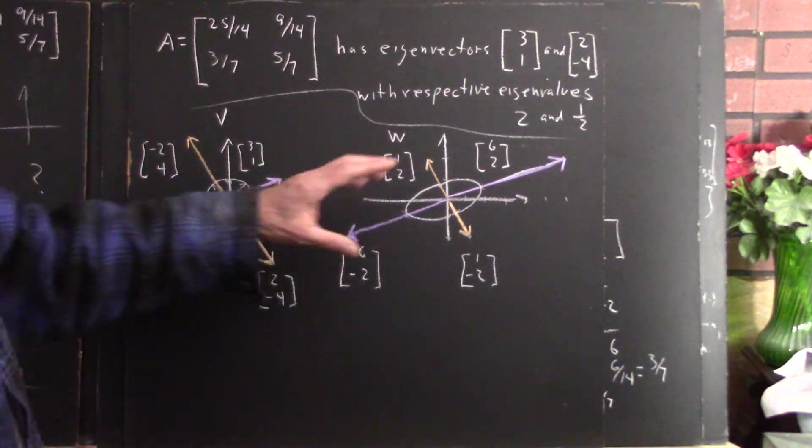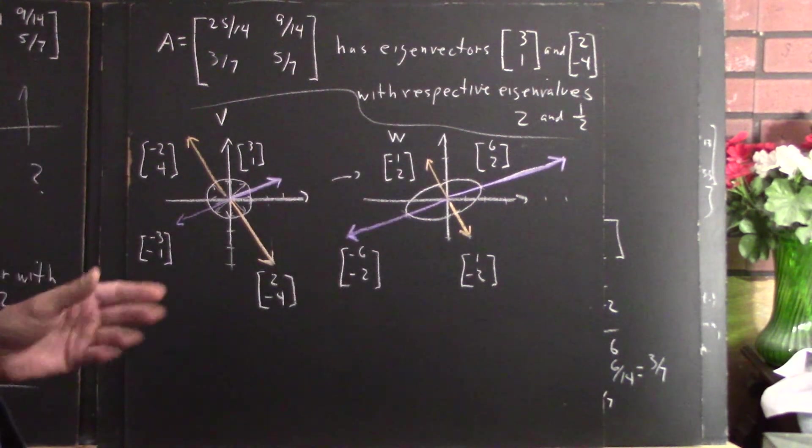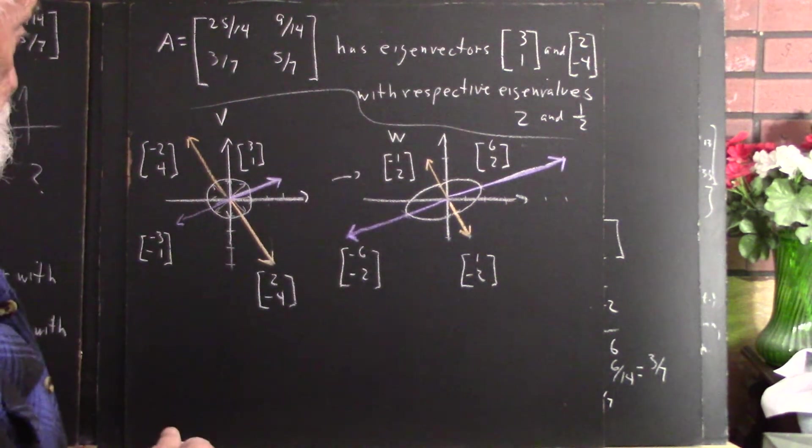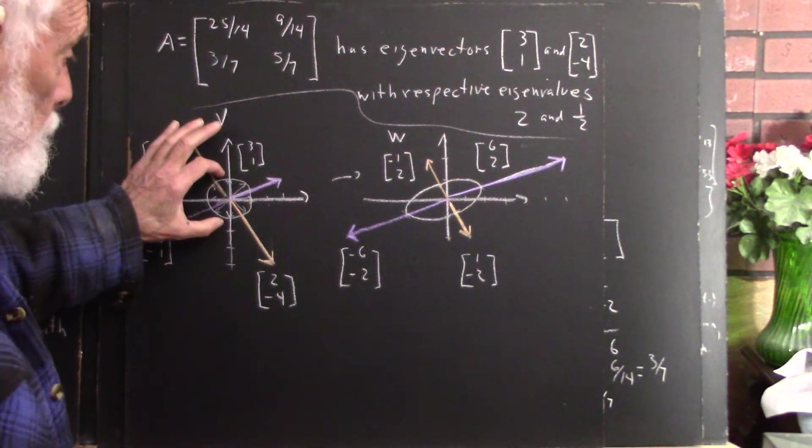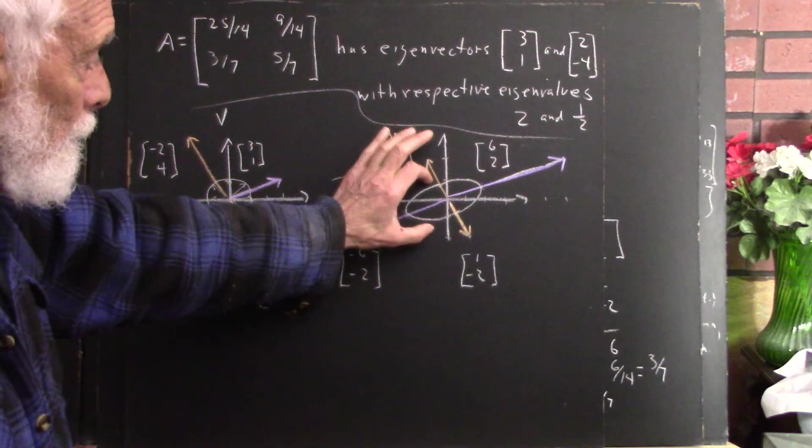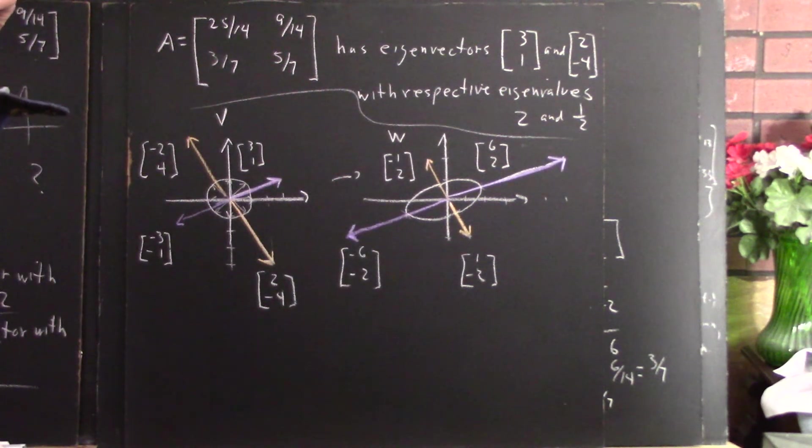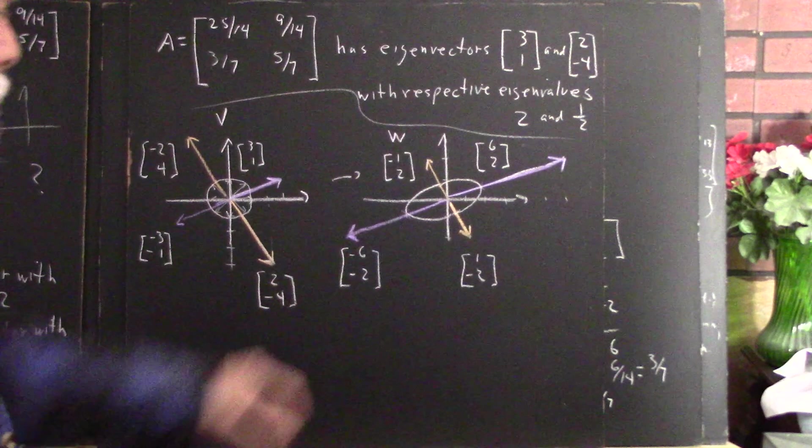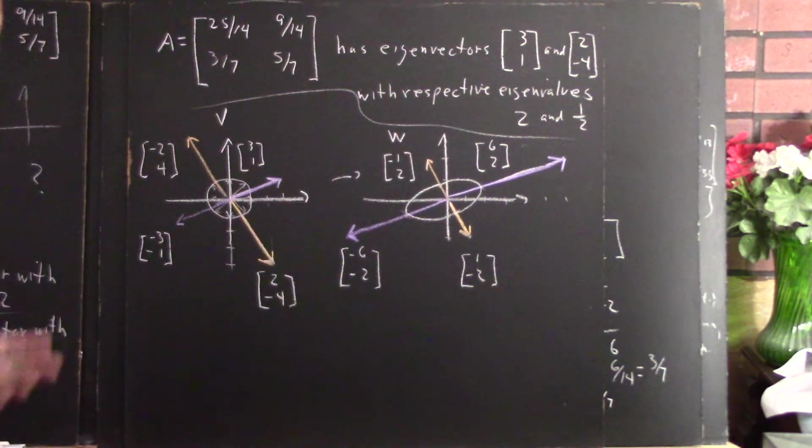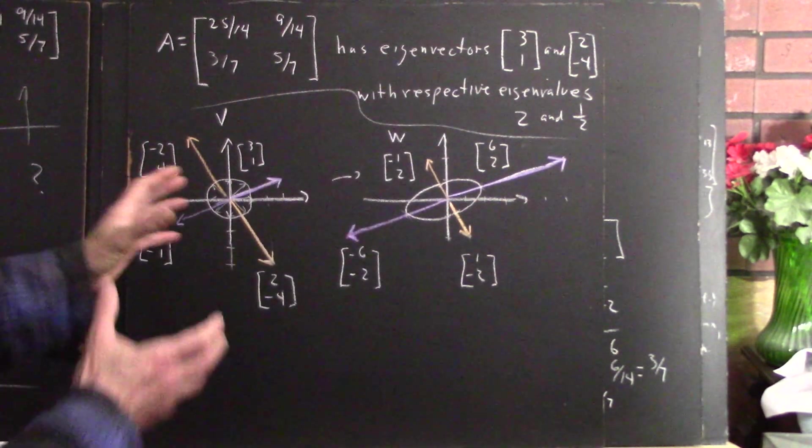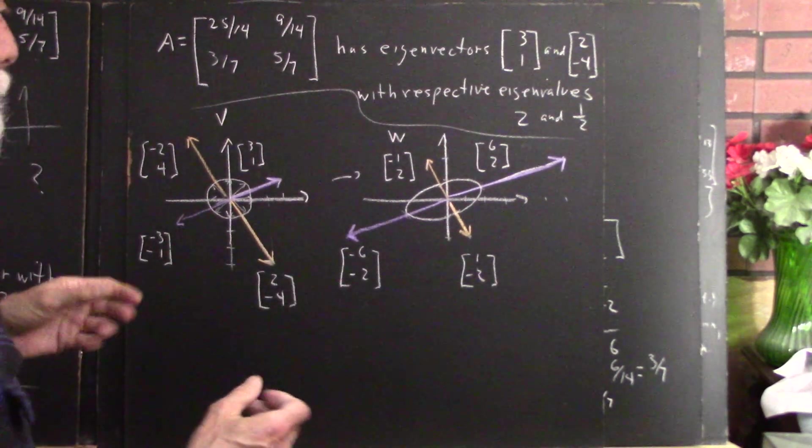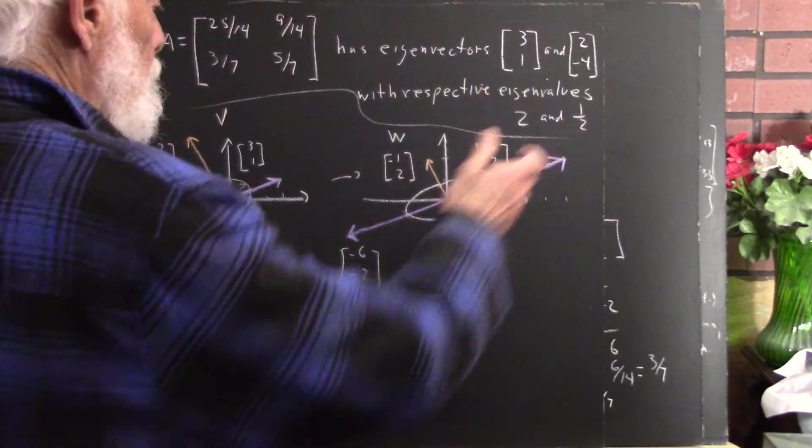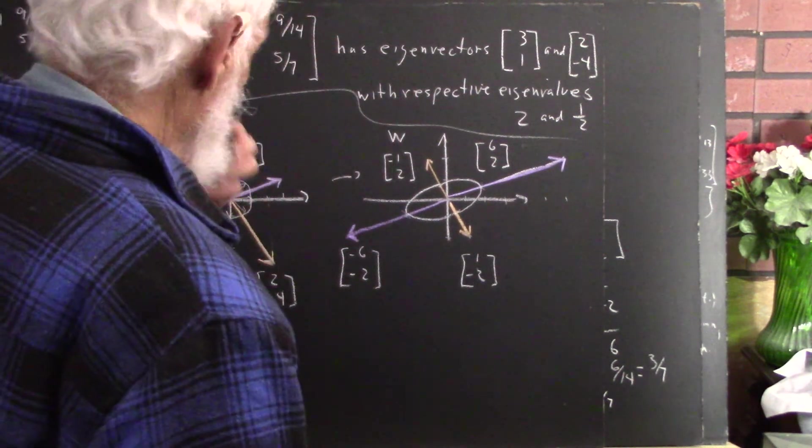So this transformation distorts space in the way indicated by the way this circle transforms here. And that ellipse actually should be somewhat skinnier, could be better drawn. But you get an idea of how space is stretched. It's stretched by factor two in this direction. It's compressed by factor two in this direction.